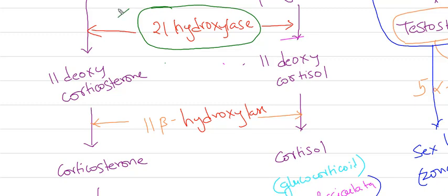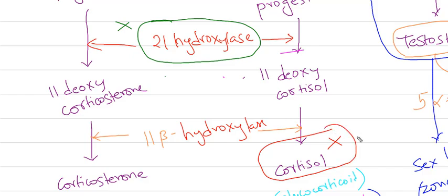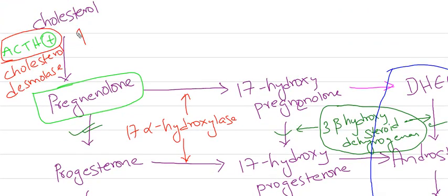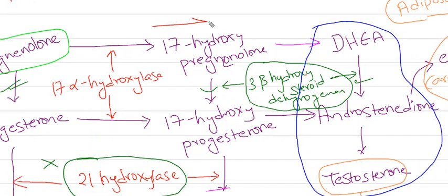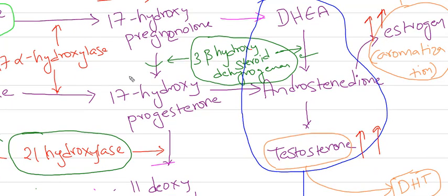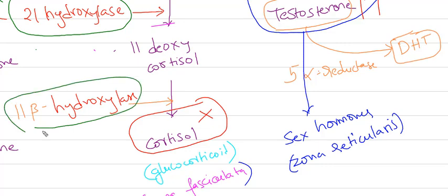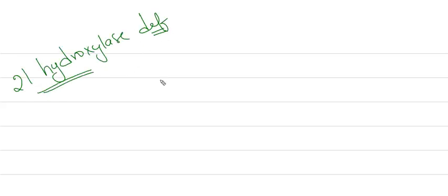21-hydroxylase deficiency is the most common enzyme deficiency causing congenital adrenal hyperplasia, accounting for 95% of all cases. It is inherited in an autosomal recessive manner. As a result, no cortisol is formed, and through negative feedback, ACTH production is increased, activating other pathways and producing hyperandrogenism — excess testosterone or androgens.